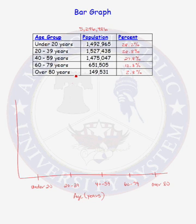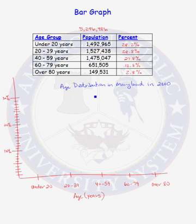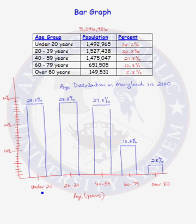Now let's label our y-axis. We have our y-axis labeled, and we also put a title on our bar graph, which every bar graph must have. The title of the bar graph is 'Age Distribution in Maryland in 2000.' We're now ready to actually construct our rectangles. For the under 20 category, we go up to 28.2, we draw our horizontal line, we draw our vertical lines to create a rectangle, and we label the top of the bar with the actual percentage. We do that for each of the other four categories, and we have our bar graph.